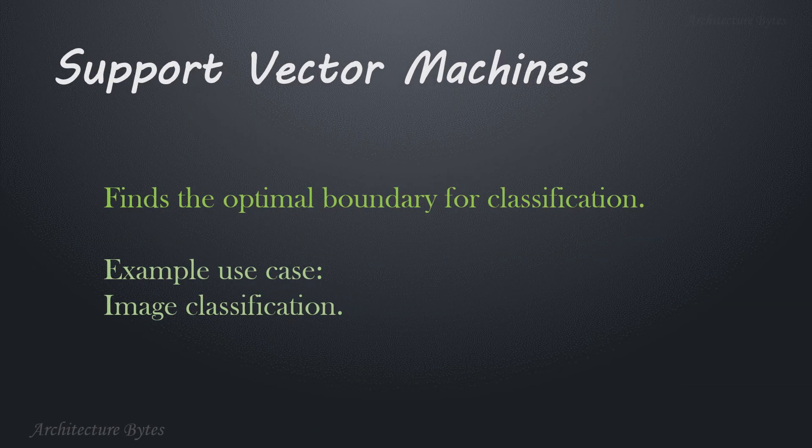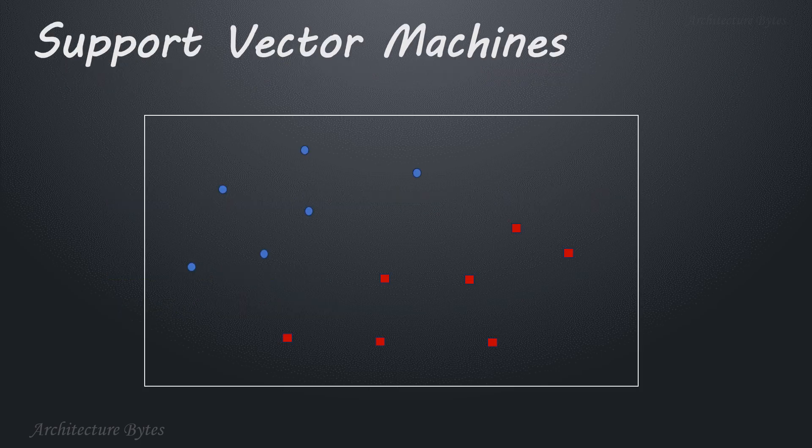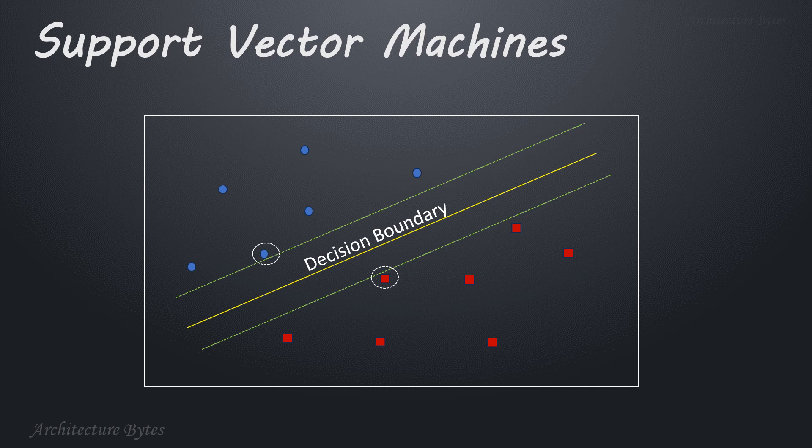Support vector machines finds the optimal boundary for classification. Example use case: image classification. The decision boundary is a hyperplane that separates different classes in the feature space. The closest points from each class to the decision boundary are called support vectors. The margin is determined by the distance of the support vectors to the hyperplane. The decision boundary depends directly on the support vectors. If they change, the boundary changes as well.